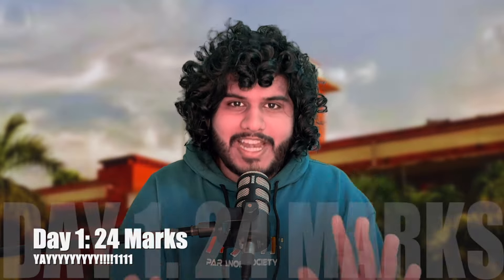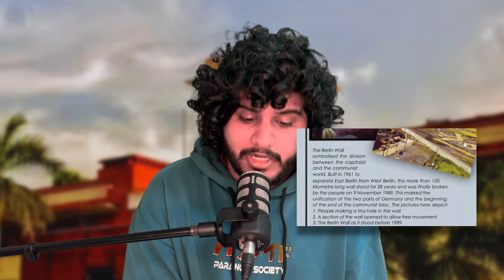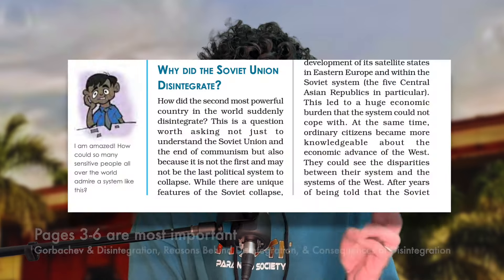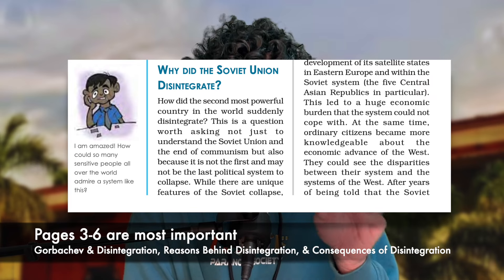Day 1 — we have to secure 24 marks. Begin with the very first chapter, End of Bipolarity. Important topics include the Fall of the Berlin Wall, Gorbachev and the Soviet disintegration, usually asked as 6 markers. The reasons behind Soviet disintegration — pages 3, 4, 5, 6 — are very important. An event can be given and you may be asked when it happened, or it can appear as an MCQ.